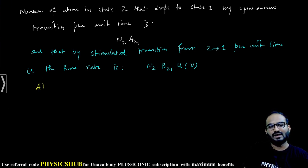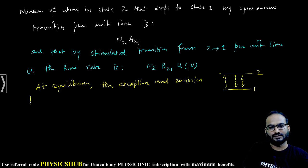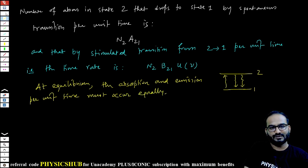What will happen at equilibrium? This is state 1, this is state 2. Via absorption, photons are going up, and while coming down from 2 to 1, two modes are available: spontaneous and stimulated. At equilibrium, these two rates will be equal. At equilibrium, the absorption and emission per unit time must occur equally.